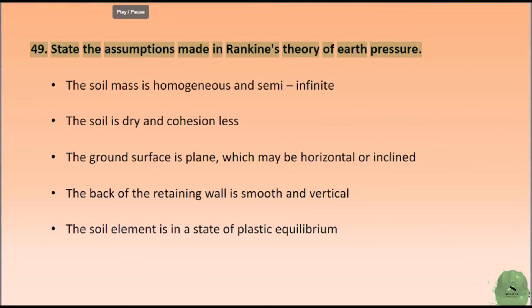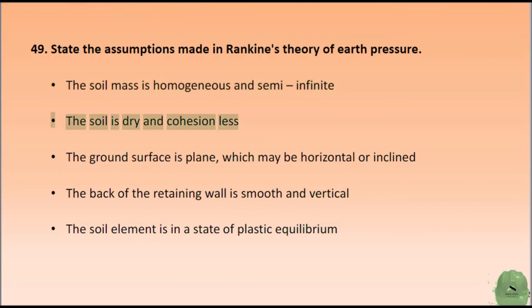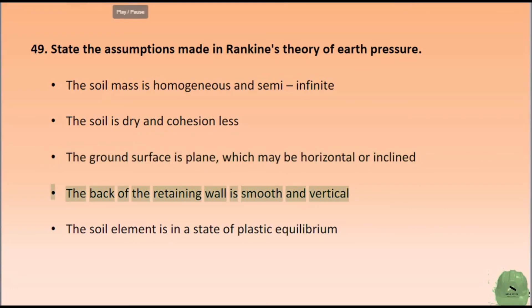State the assumptions made in Rankine's theory of earth pressure. The soil mass is homogeneous and semi-infinite. The soil is dry and cohesionless. The ground surface is plain, which may be horizontal or inclined. The back of the retaining wall is smooth and vertical. The soil element is in a state of plastic equilibrium.